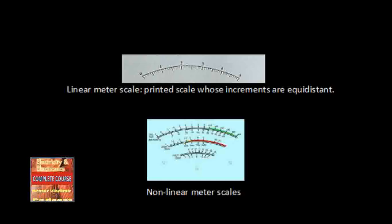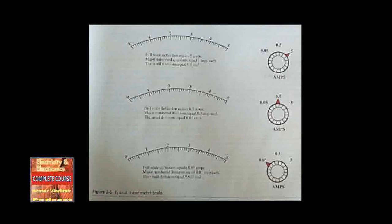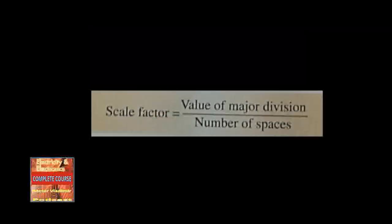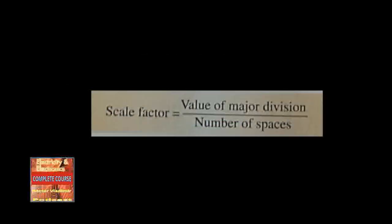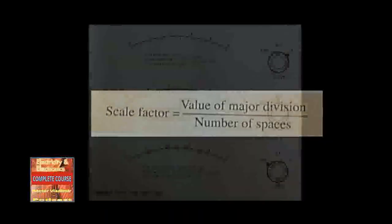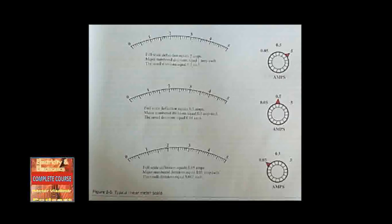The linear meter scale has evenly spaced marks used to indicate the amount of current flowing or voltage present. To determine the value of each mark between major divisions, use the scale factor formula: scale factor equals the value of the major division divided by the number of spaces. Study figure 2-5. Note that the value of each division changes as the range selector changes. On the scale, the first major division is marked with a 1. In the top example, the range selector is set to 5 amps, meaning full scale deflection is 5 amps. The 1 represents 1 amp, and there are 10 spaces between 1 and 0, so dividing 1 by 10 means each space equals 0.1 amp.